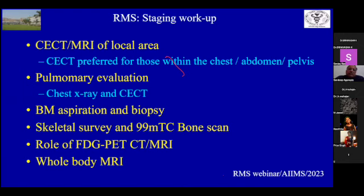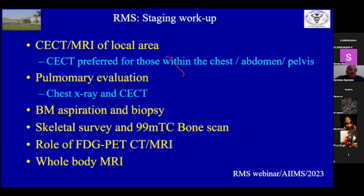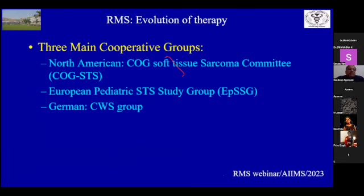The staging workup is standard: to know the site of origin, extent of local disease, spread to lymph nodes and lungs, and bone marrow aspiration and biopsy for metastatic spread. The role of FDG-PET is coming up slowly but is not yet well-defined. Whole body MR can also be done for metastatic spread, but standard workup as for all sarcomas is performed for all children with RMS.